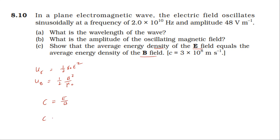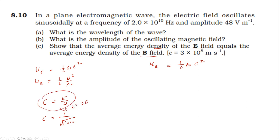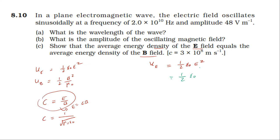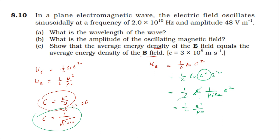The speed of light is equal to 1/√(μ₀ε₀). Substituting into the magnetic energy density expression: B²/(2μ₀) becomes (E/c)²/(2μ₀) = E²/(c²·2μ₀). Since c² = 1/(μ₀ε₀), substituting gives E²·μ₀ε₀/(2μ₀), and the μ₀ cancels, leaving (1/2)ε₀E². This equals the electric energy density.